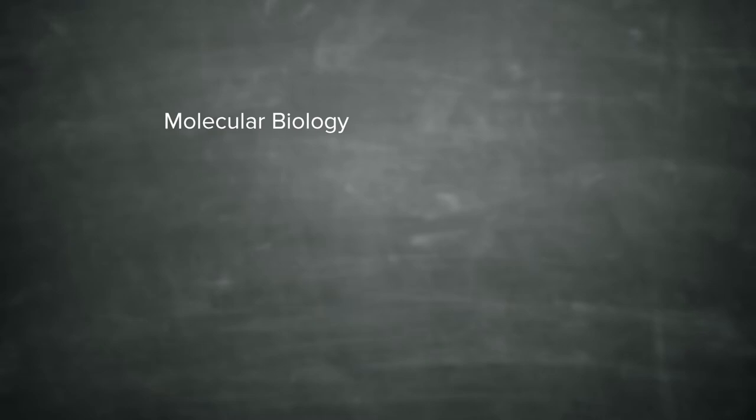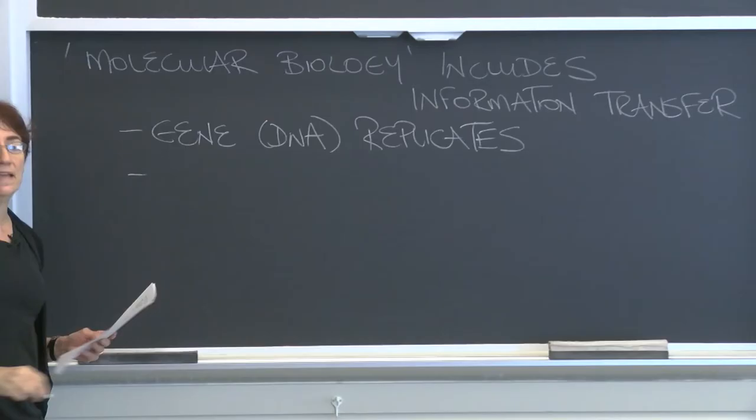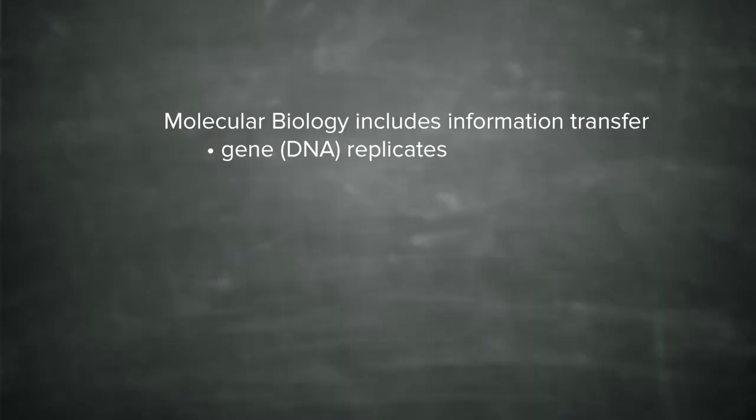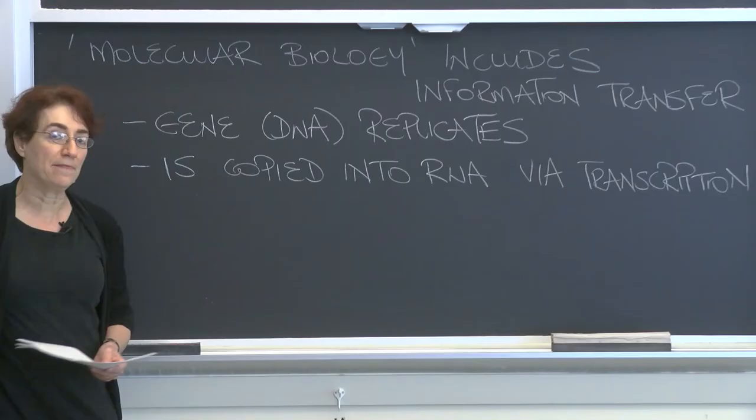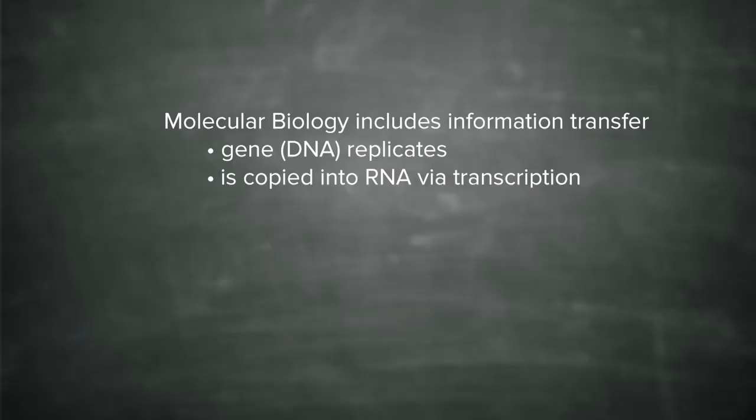The notion of information transfer is part and parcel of the field of biology called molecular biology. So molecular biology, a term you should know, includes biological information transfer. In this notion of information transfer, the gene, usually DNA, replicates. It makes more of itself. The gene is copied into another related nucleic acid, RNA. The process involved here is called transcription. And then the RNA is used in a process called translation to make a protein. So the RNA is translated into protein. This is the information transfer.